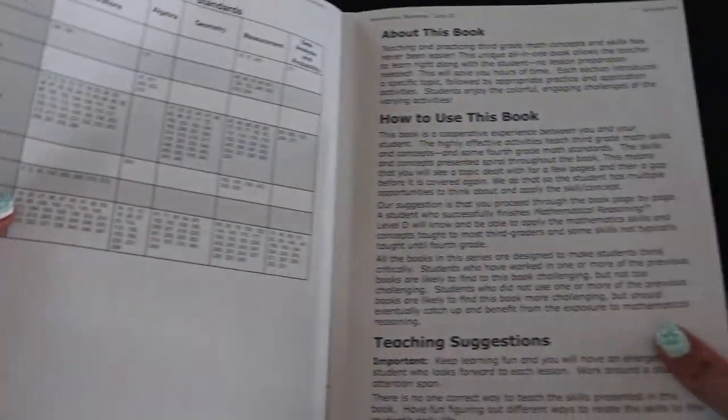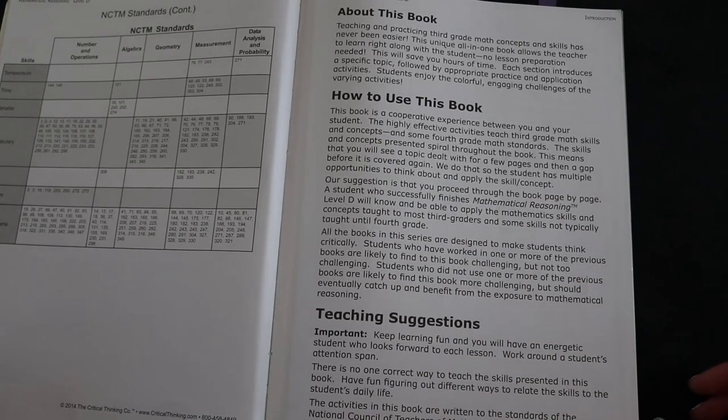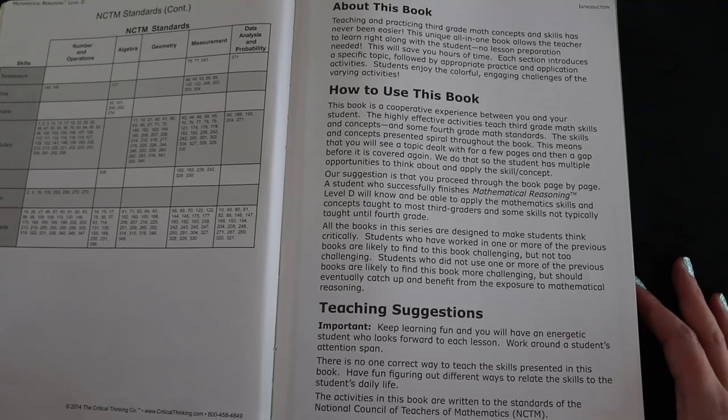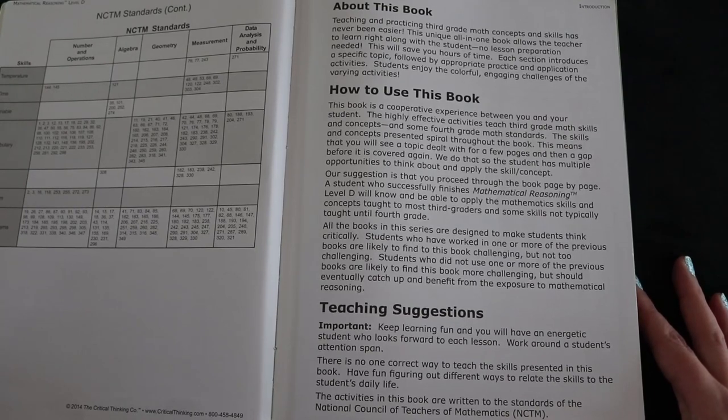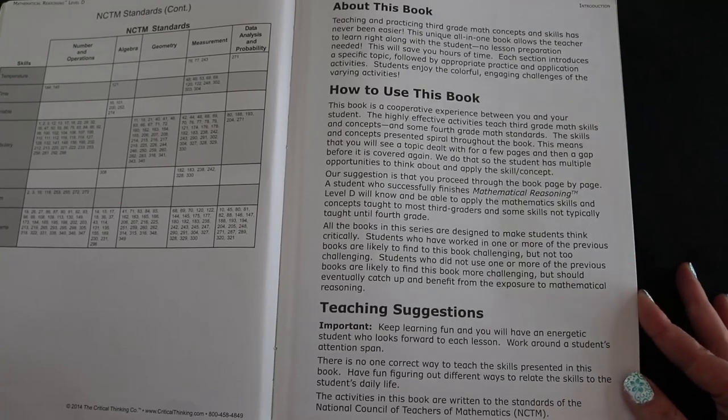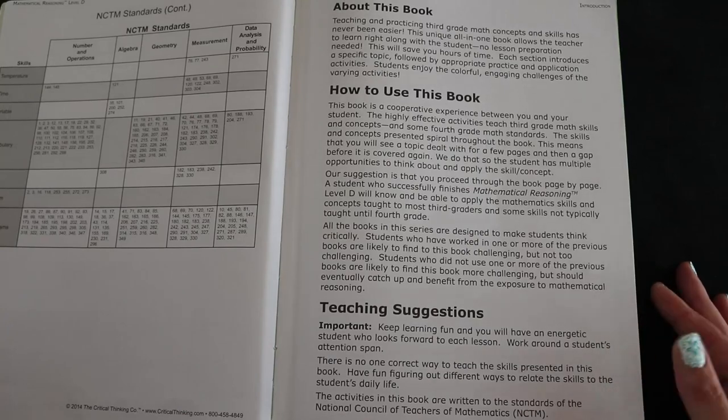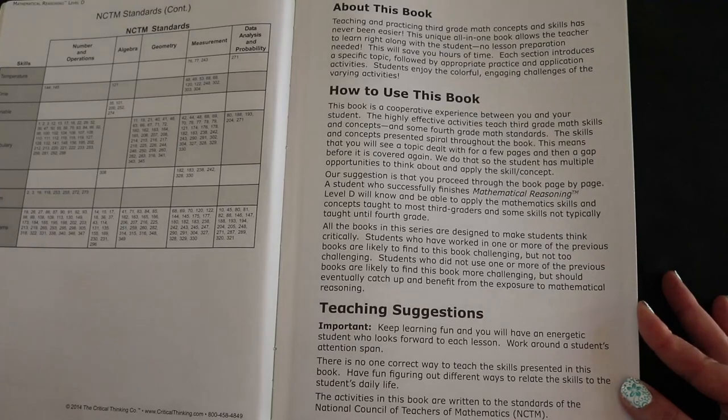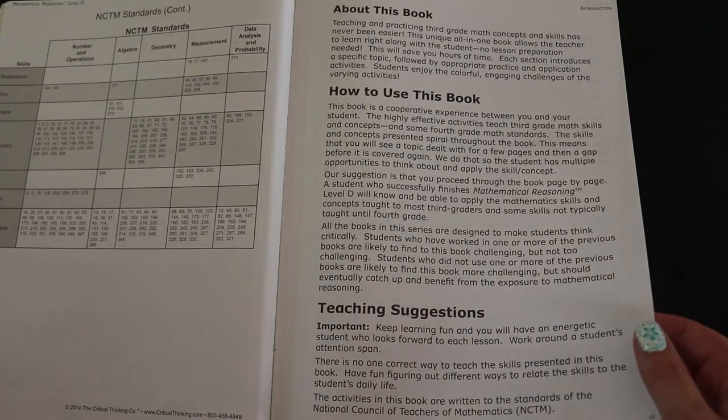Over here it talks about the book, how to use it, and teaching suggestions. It takes a spiral approach throughout the book, meaning it'll introduce and cover a topic for a few pages and then a gap before it covers again. They do that so that students have multiple opportunities to apply the skill or concept. They suggest working page by page, and they also mention that students that have worked in previous mathematical reasoning books are likely to find this level challenging, but not too challenging. And for students just jumping right in without previous exposure will find it challenging, but will be able to catch up and benefit from using this book anyway.